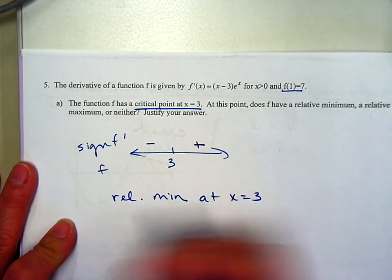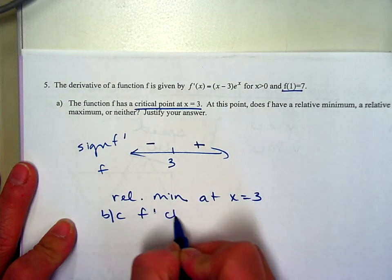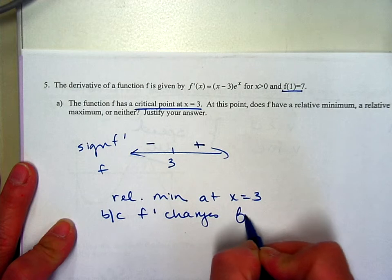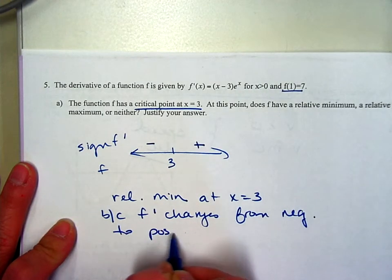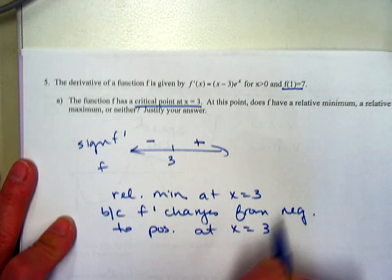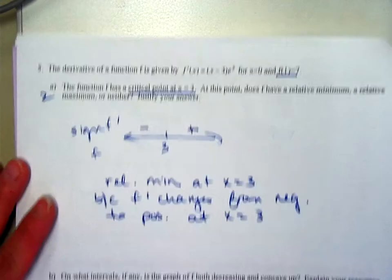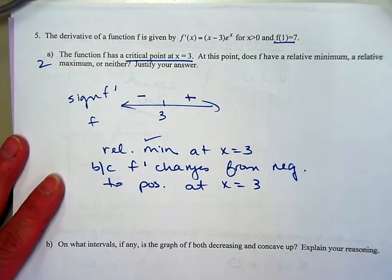Because f prime changes from negative to positive at x equals 3. This is a two-point question. It is a point for the relative min and a point for your justification.